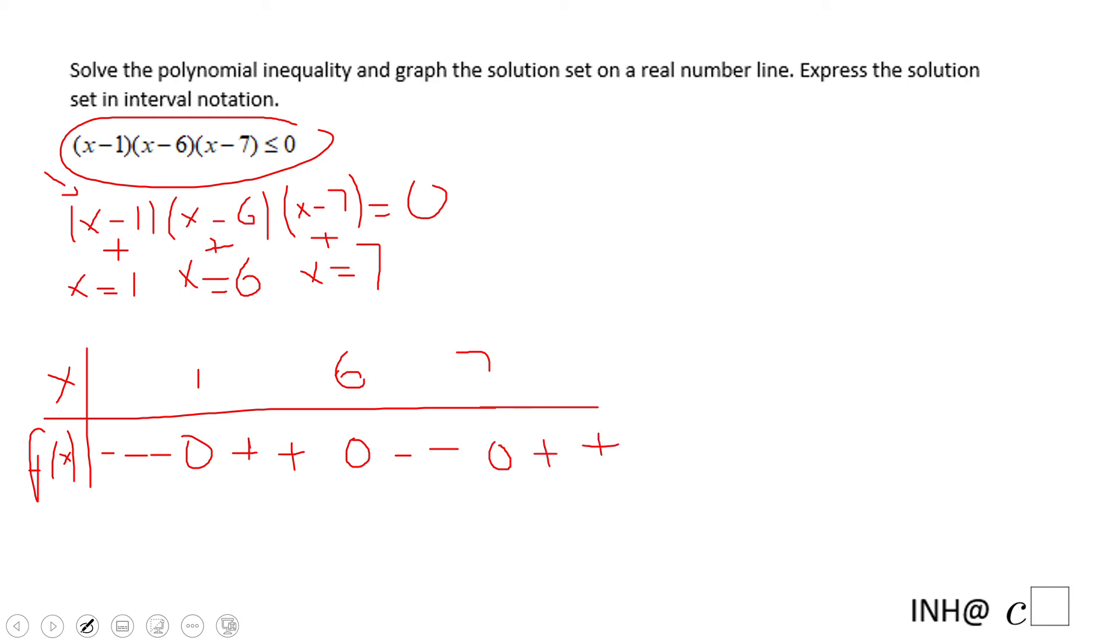So now we have the sign table for this polynomial inequality and we can look back and see when this is less or equal to zero. Between negative infinity and one, be sure you put bracket at one because you have the equal sign, and parentheses at negative infinity, and between six and seven. Eventually you may want to use the union sign if that is asked. Those are the moments where this polynomial inequality is less or equal to zero.